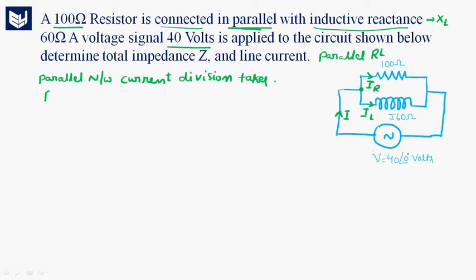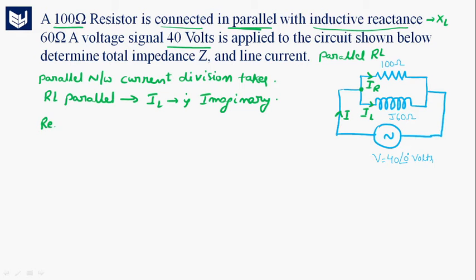As it is an RL parallel network, the inductive current is imaginary. So IL is the imaginary part of the complex current expression. The real part of the complex current is the resistive current IR, and IL is the imaginary part.